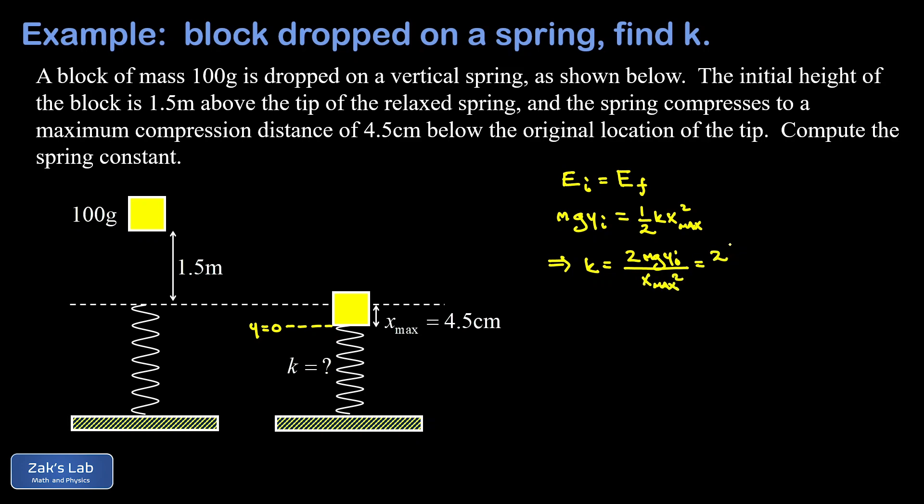I have two times the mass of the block, converting to SI units, that's 0.1 kilograms. We'll use 9.8 for g. And then my initial height, that means with respect to my choice of origin, my initial height is four and a half centimeters plus another one and a half meters. So four and a half centimeters, that's 0.045 meters.